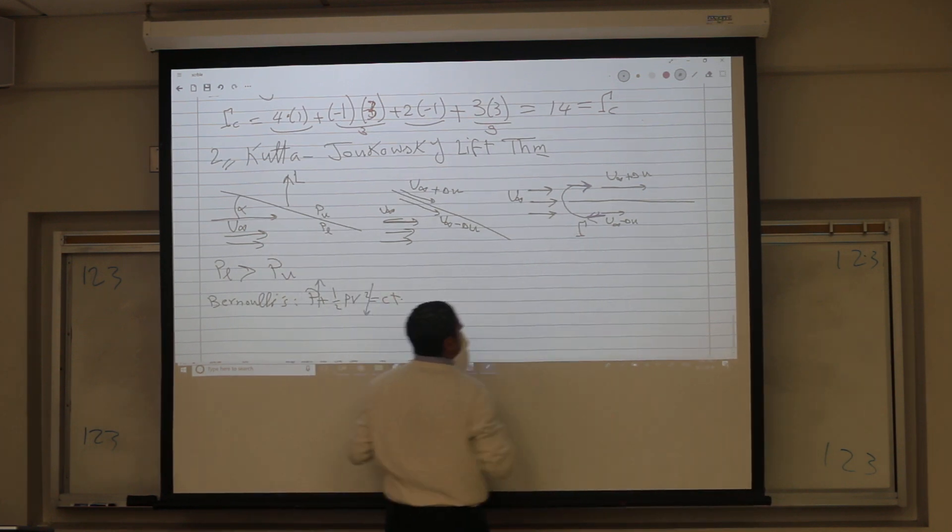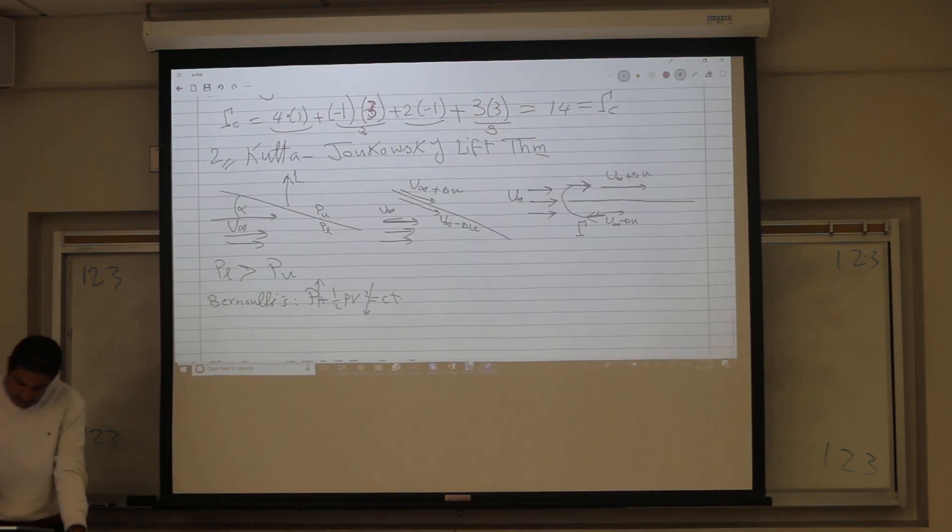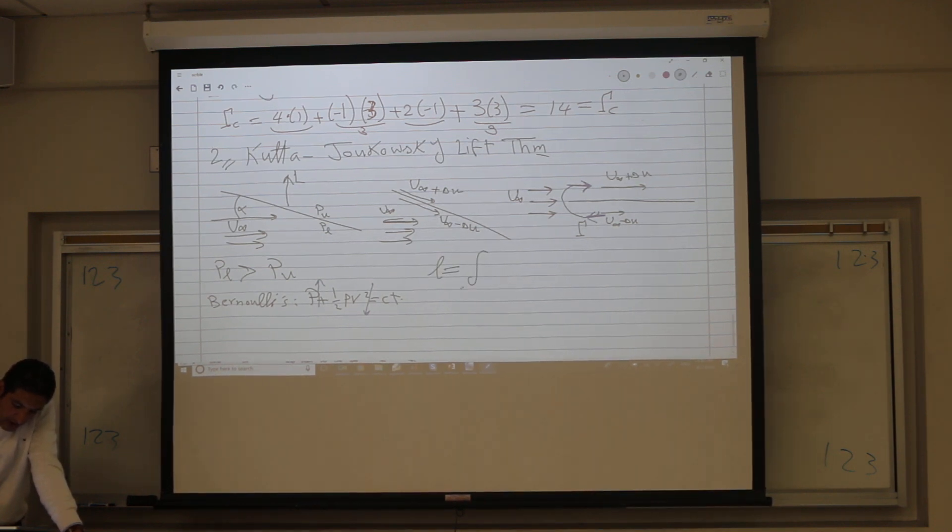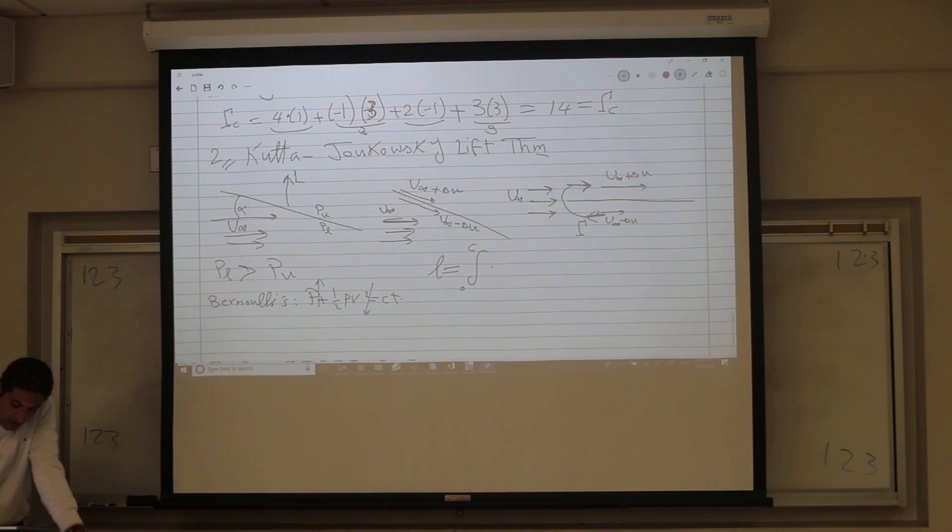We can derive it mathematically in a minute. So the lift, the two-dimensional lift, is the integral from zero to chord of the pressure difference, lower minus upper, as a function of x, dx. From the Bernoulli equation, this is one half rho, v squared upper minus v squared lower. It's pressure lower minus upper, so velocity upper minus lower.